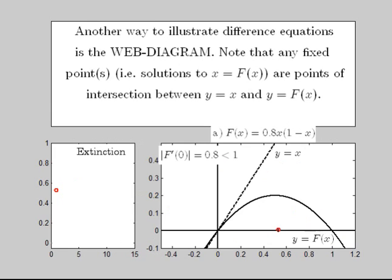In a web diagram, we can illustrate an orbit by starting at the seed x_0. F(x_0) yields x_1, which is the vertical height of the curve at x_0. The red web moves horizontally to the y = x line, demonstrating that the output becomes the input.